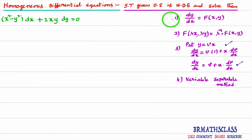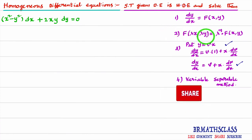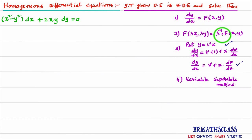What is the first step? Whatever the given differential equation, we will write it in the form dy/dx = f(x, y). Afterwards, we calculate f(λx, λy). If we can express f(λx, λy) in the form λⁿ · f(x, y), then we say the given differential equation is a homogeneous differential equation of degree n.